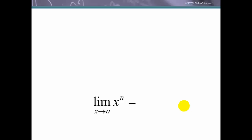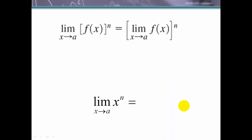When we have the limit as x approaches a of x^n, this is just a combination of the power law and the identity function, giving us a^n.